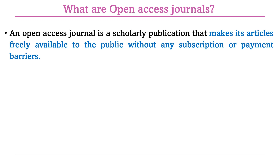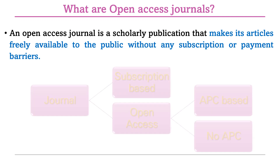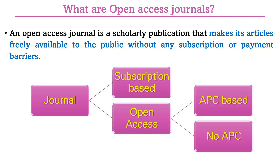First, let us understand what an open access journal is. An open access journal is a scholarly publication that makes articles freely available to the public without any subscription or payment barriers for readers. Those who download or read the articles do not have to pay any subscription. Normally, journals can be categorized into two main categories: subscription-based, where readers must purchase a subscription, and open access journals, which are freely available for downloading or reading.